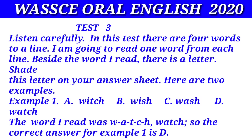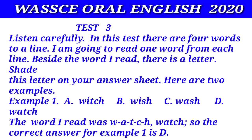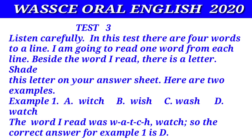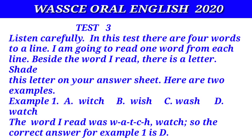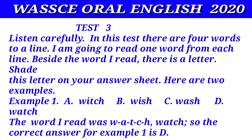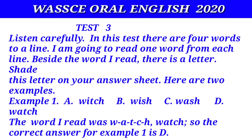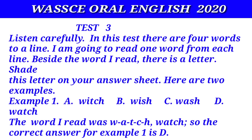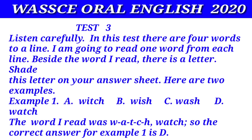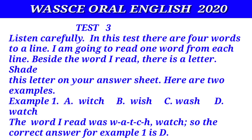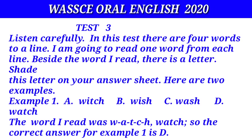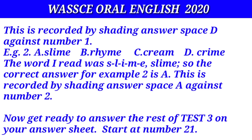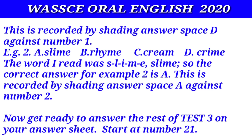Test three. Listen carefully. In this test there are four words to a line. I'm going to read one word from each line. Beside the word I read there is a letter. Shade this letter on your answer sheet. Here are two examples. Example one: watch. The word I read was W-A-T-C-H, watch. So the correct answer for example one is D. This is recorded by shading answer space D against number one.